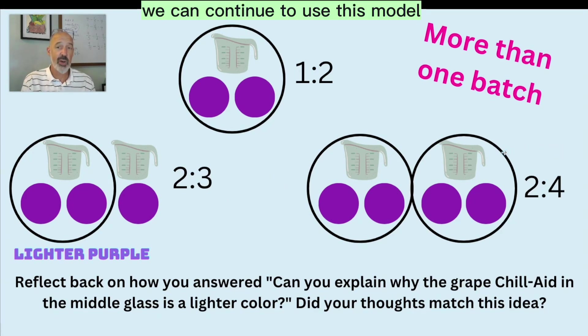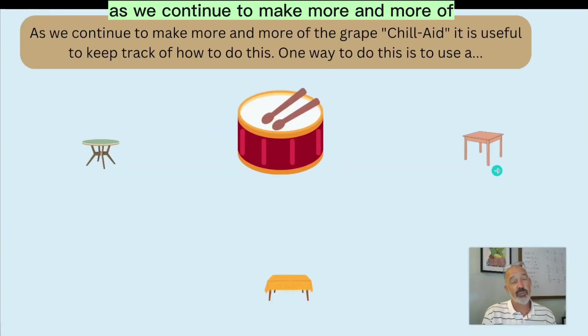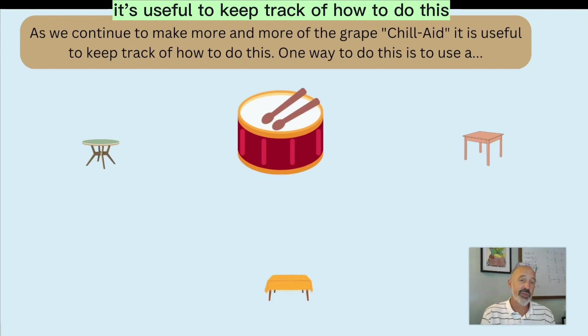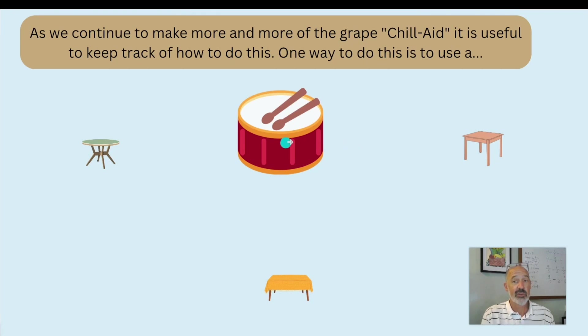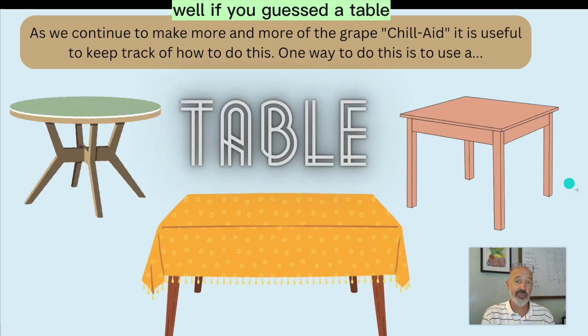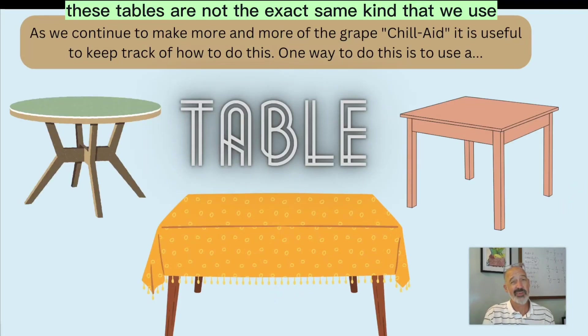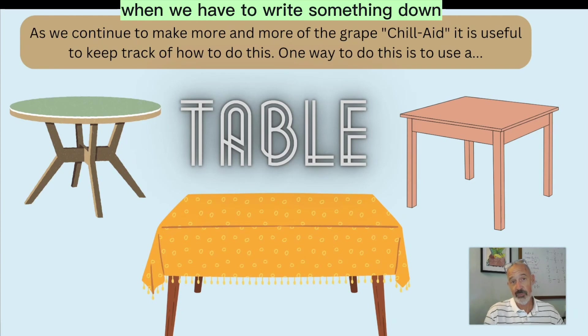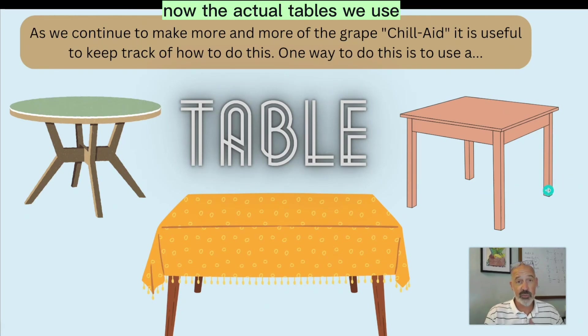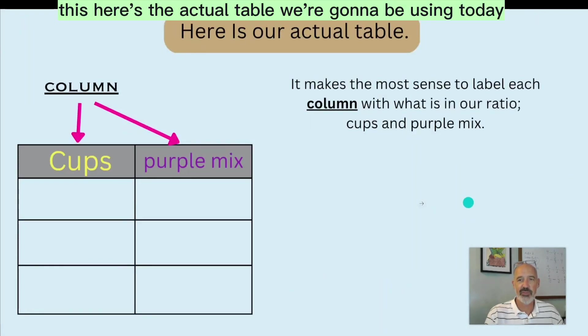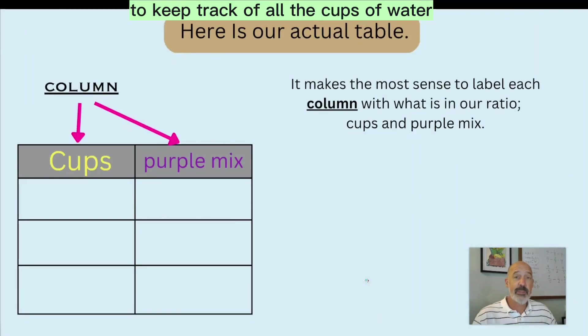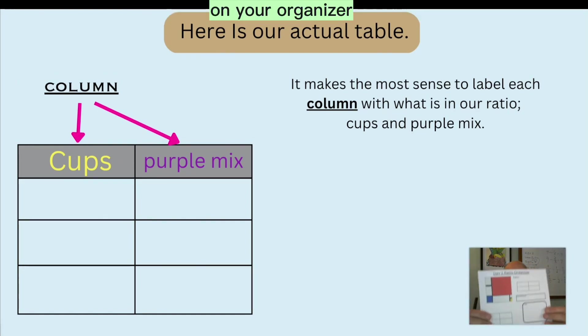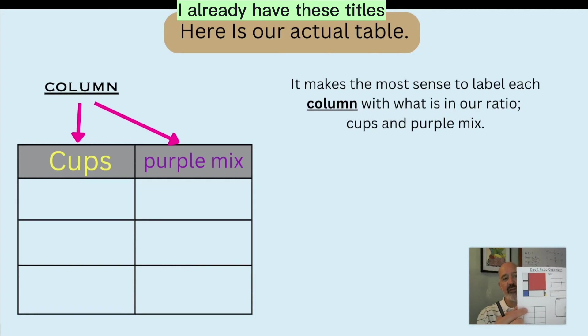We can continue to use this model, this diagram to help us. However, as we continue to make more and more of the grape Chil-Aid, it's useful to keep track of how to do this. Now, one way to do this is to use a, any guesses out there? Not a drum. That's a drum roll. Well, if you guessed a table, then you're correct. Now, these tables are not the exact same kind that we use in math to keep track of ratios, but we do use them sometimes in lieu of a desk when we have to write something down. Now, the actual tables we use, you've already kind of seen one at the beginning of this class. It is this. Here's the actual table we're going to be using today to keep track of all the cups of water and all the amounts of purple powder we put in the water to make our Chil-Aid.